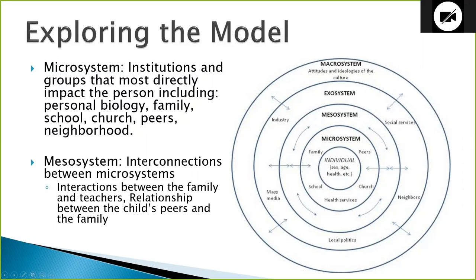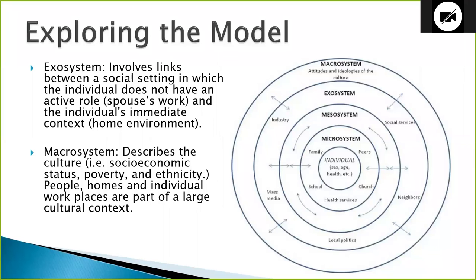The exosystem involves links between a social setting in which the individual does not have an active role and the individual's immediate context. Examples include a spouse's workplace, social services, mass media, and local politics. You may not be actively involved in these on a regular basis, but they do have an impact — like a homeowners association that shapes how you keep your yard or paint your house.